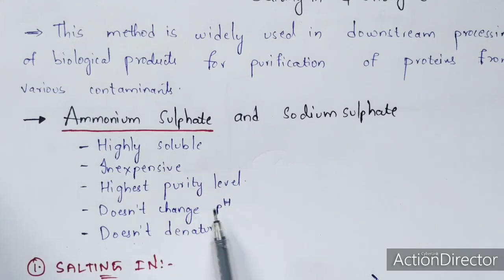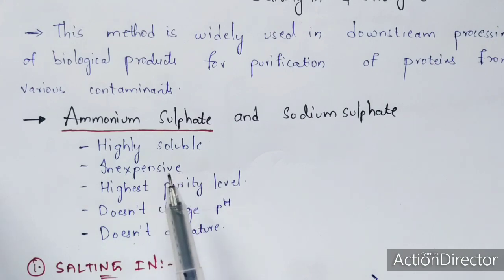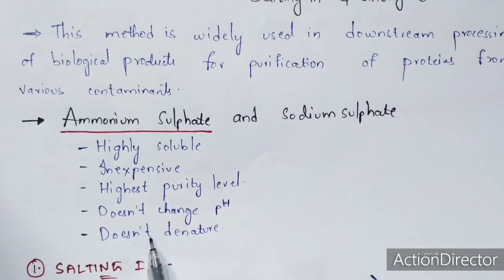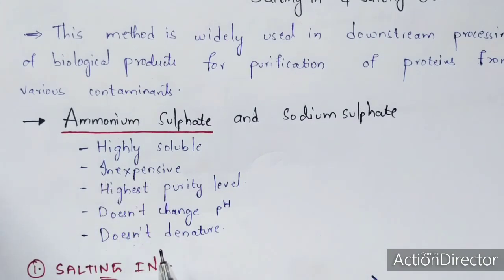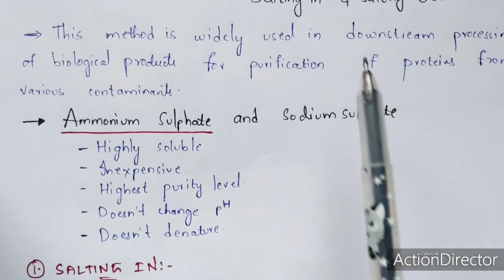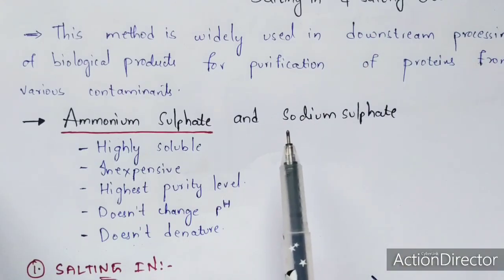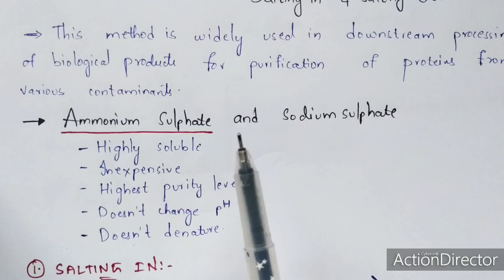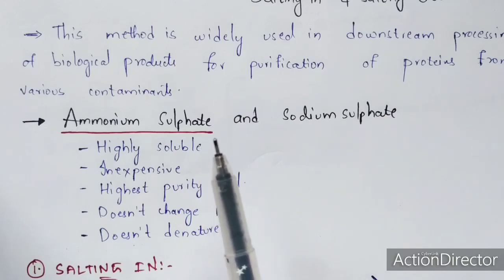Importantly, ammonium sulfate does not change the pH when added to a protein solution. And when ammonium sulfate is used, the proteins will not get denatured. Denaturation is the process of conversion from the higher-order structures of a protein down to the primary structure. Normally, proteins have four structural levels: primary, secondary, tertiary, and quaternary structure.